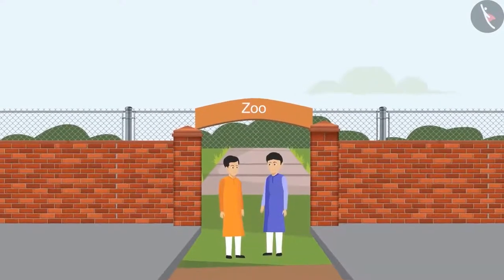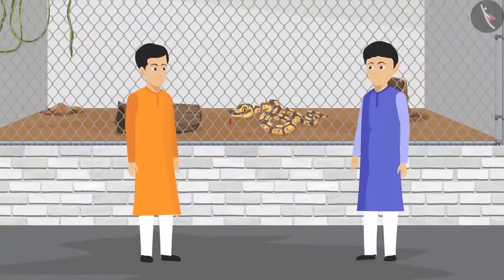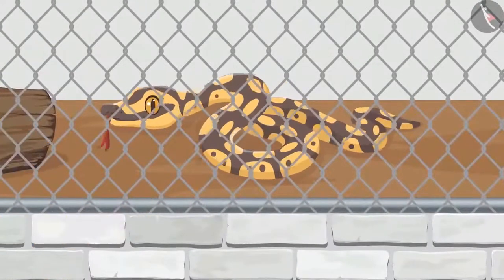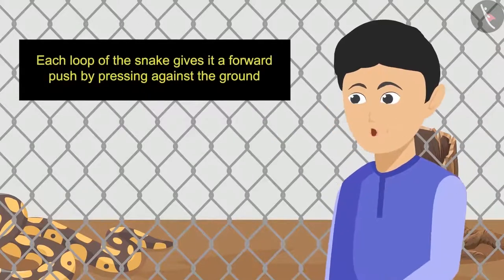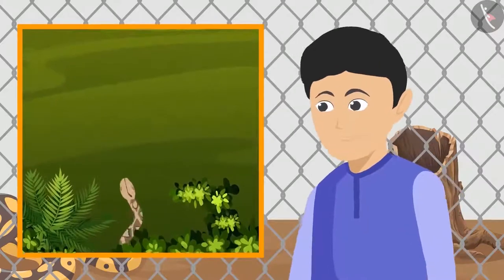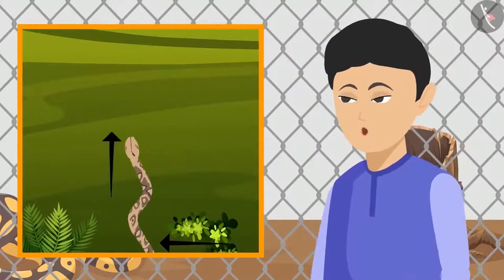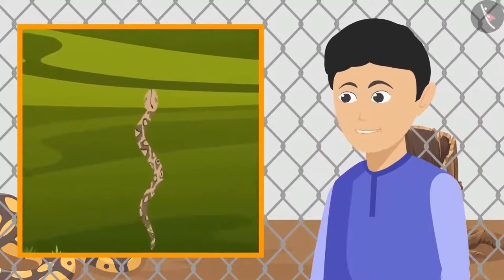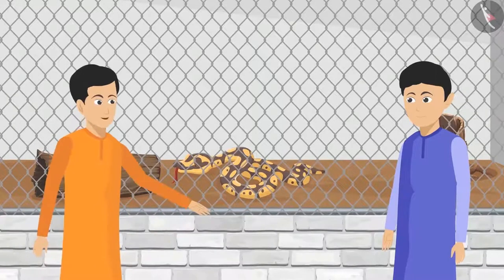At last they reached the zoo on Sunday. They went near the snake yard fence first. 'See that Sikandar, how that python is slowly sliding forward!' 'Yes, I read about it — snakes curve their bodies in loops like the letter S. Each loop gives a forward push by pressing against the ground. A push from one side turns it to the left, and a similar push from the other side turns it to the right. This keeps its movement balanced and it slides forward easily.' 'So that is why it makes curves like the letter S — pretty interesting!'